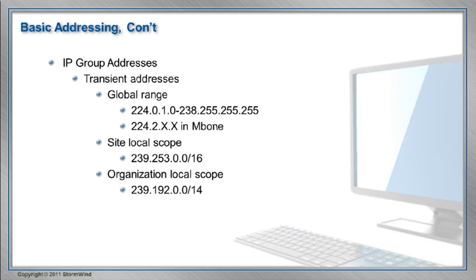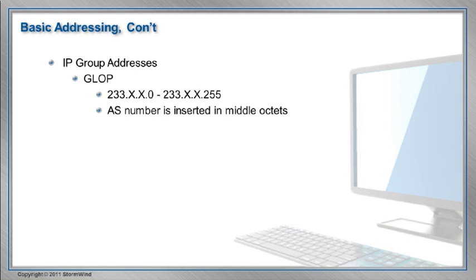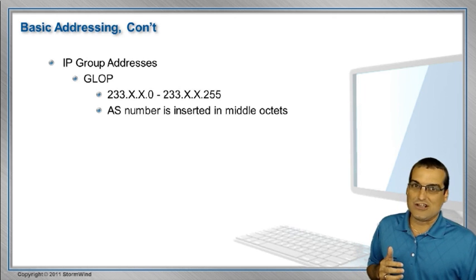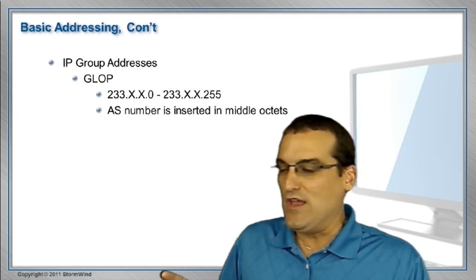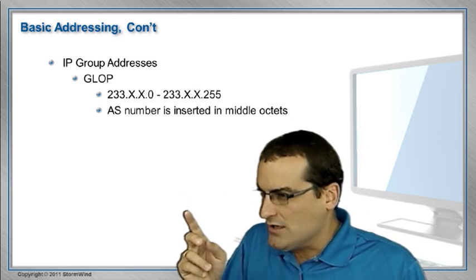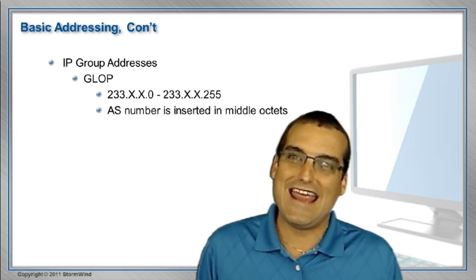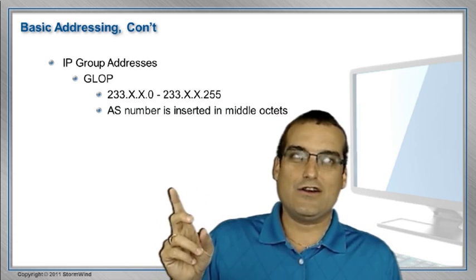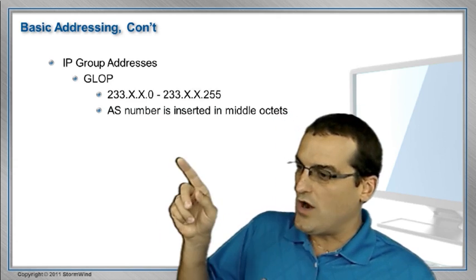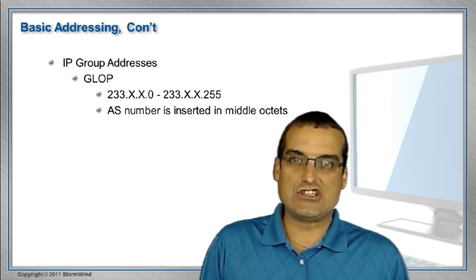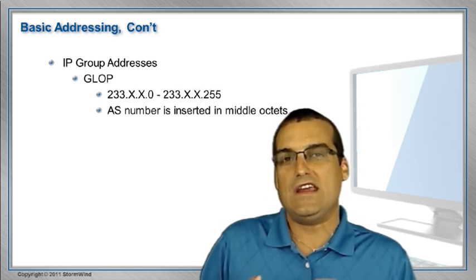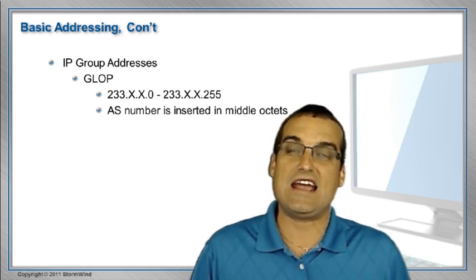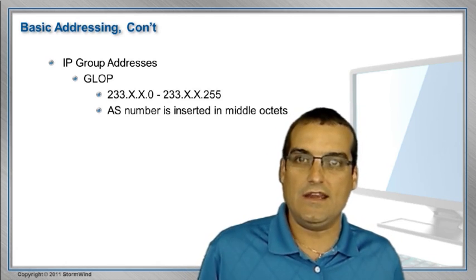It wouldn't be a complete discussion about multicast addressing without discussing GLOP addresses — and this is absolutely hysterical. GLOP doesn't stand for anything. You would think globally, listable, organizational — no, GLOP doesn't stand for anything; it's a name they made up just for fun for this particular reserved space. What happens here is a company with a public AS number can encode their AS number in those two middle octets: 233.xx.0 through 233.xx.255. You insert your AS number in the middle, and it gives your organization reserved scope globally on the public internet.